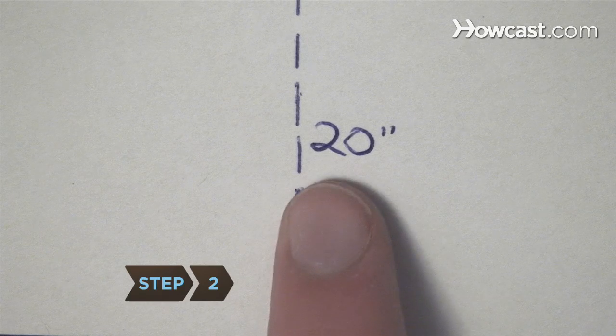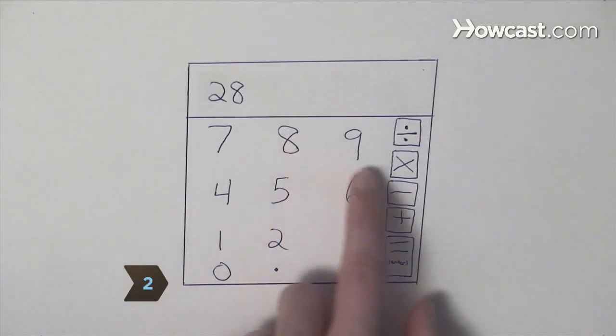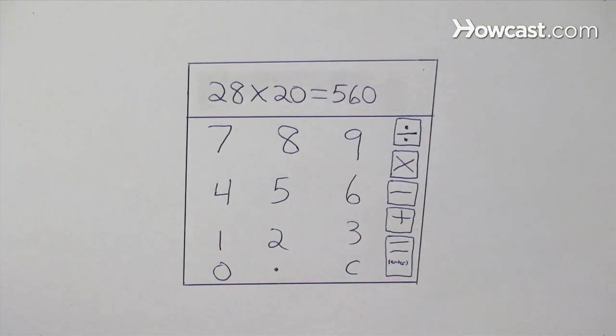Step 2. Find the height of the trapezoid. Using a calculator, multiply the sum of the lengths by the height.